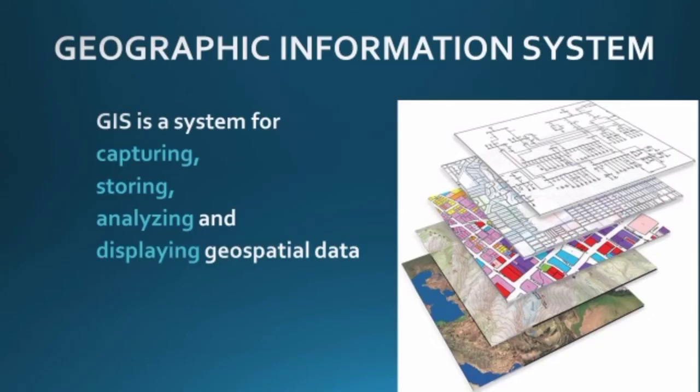GIS, or Geographic Information System, is a system for capturing, storing, analyzing and displaying geospatial data in the form of maps. You capture, store, analyze and display it in the form of understandable, easy maps, so you can analyze for everyone.